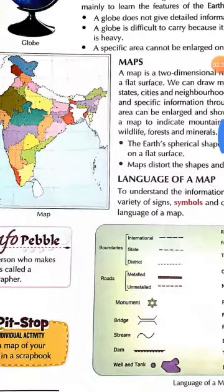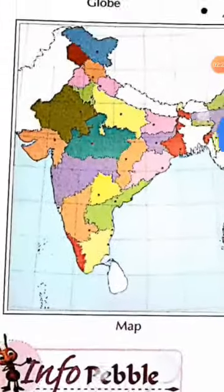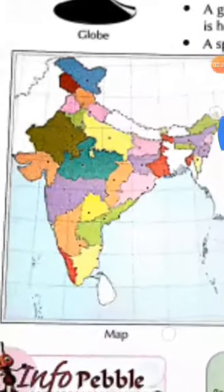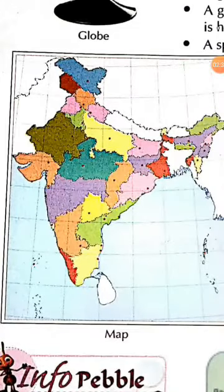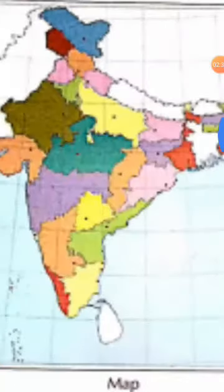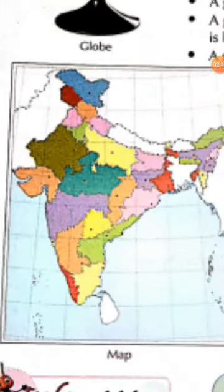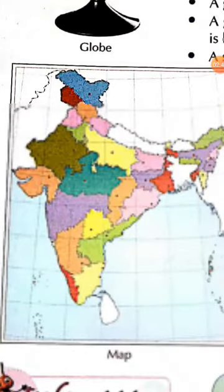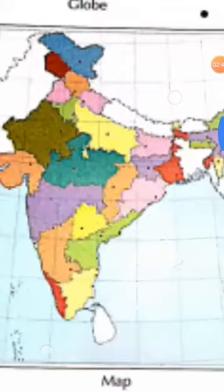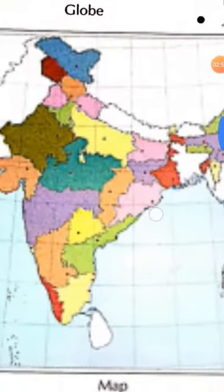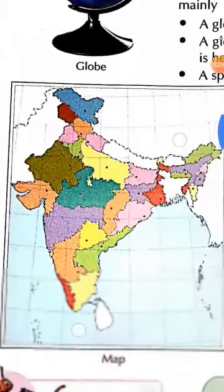Now, it is a map. You can see it is drawn on a flat surface. It is India's map, and it shows different states in different colors. You can identify different states by their color on this map. Different continents, oceans and different small areas can also be shown in large size on a map.